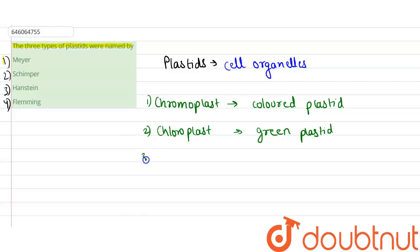And third one was leukoplast. Now it was used for storage and it was colorless plastid.